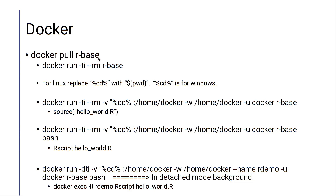Once you have the r-base image in your local Docker repository, you can execute any of these three commands to run an R script using Docker. The first command will land you in the R terminal or R console. The second command will land you in a Linux terminal or bash shell. The third command will run the r-base bash shell in the background in detached mode.